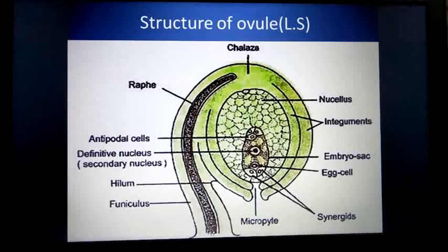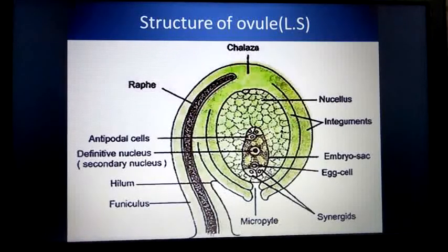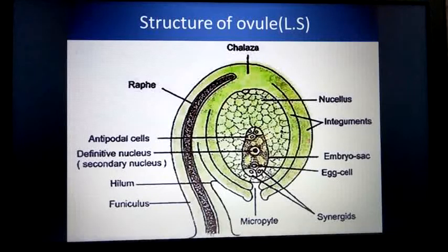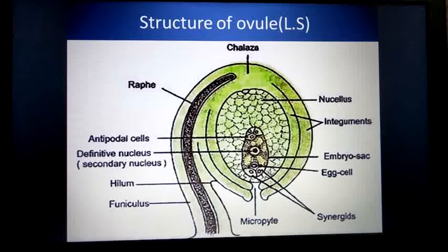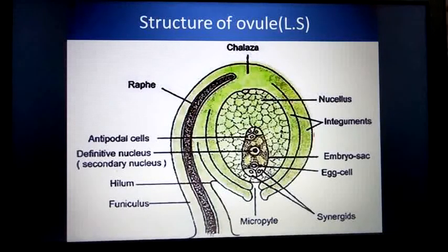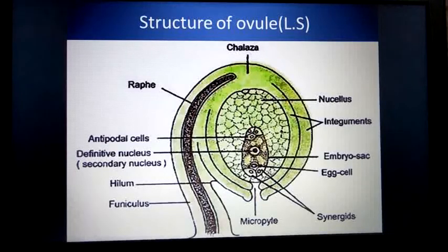The body of the ovule is covered by two layers. These layers are known as integuments. There are two integuments in this ovule — this is the outer integument and this is the inner integument — so it is known as a bitegmic ovule. In some plants there is only one integument, which is known as a unitegmic ovule, for example in gamopetalous flowers. Bitegmic ovules are found in polypetalous and monocot plants. These integuments protect the embryo sac.